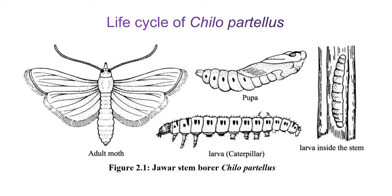In the diagram you can see the adult moth, pupa, larvae (caterpillar), and larvae inside the stem. The larvae are voracious feeders, continuously feeding on the tender leaves of the plant, then tunneling into the stem where they pupate. The adult moth wingspan is about 25 mm, measured from the tip of one wing to the tip of the other when fully spread.